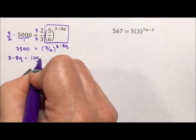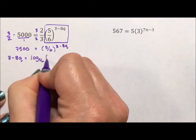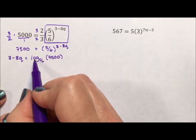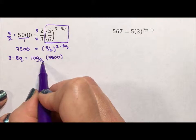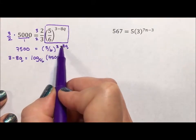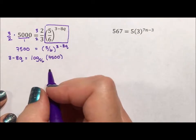The base of the exponent is the base of the log, 5/6. And then the 7,500 is the argument. Logs ask the question, base to what exponent equals argument? Base to what exponent equals argument?